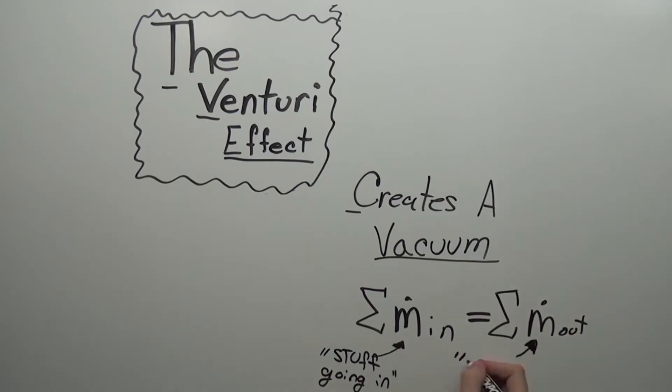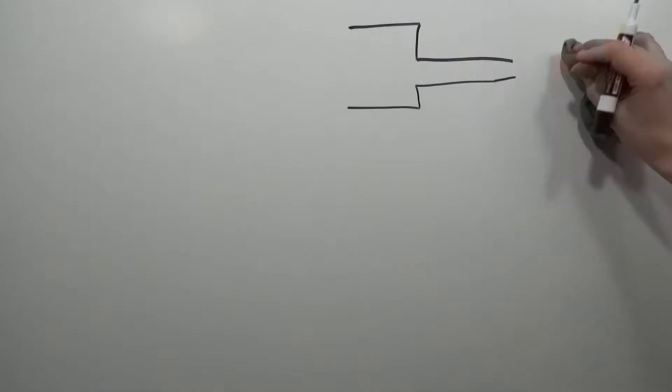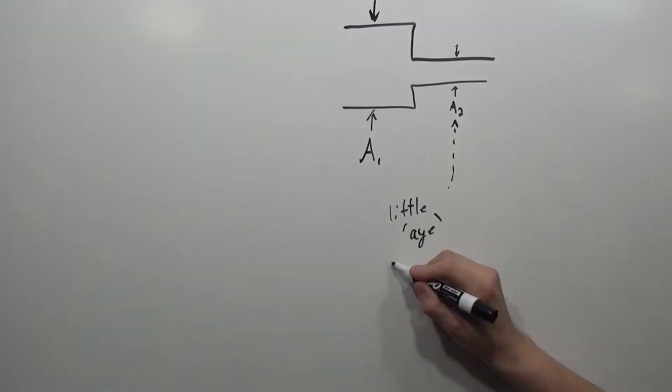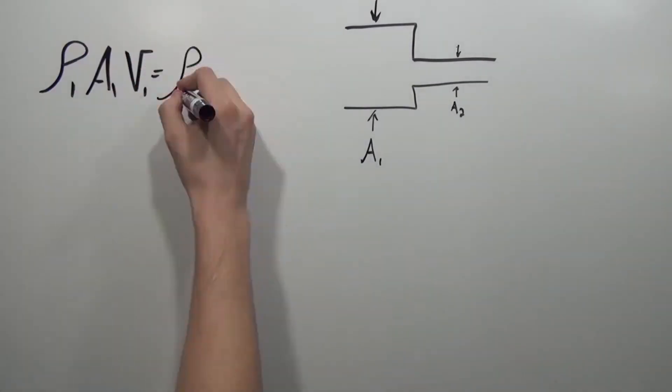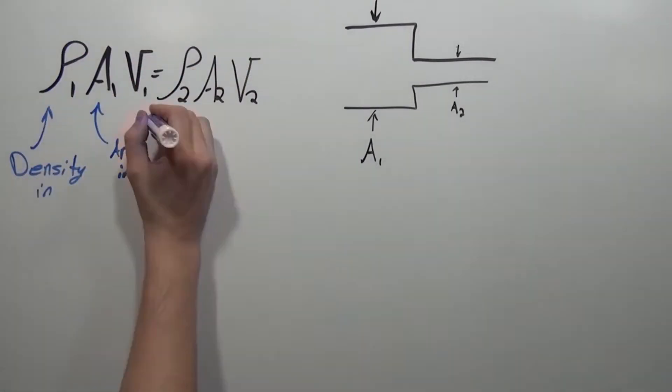This may seem counterintuitive, but if you think about mass conservation, this makes sense. The same amount of mass that goes into the pipe must come out. For this to happen, because we reduced the diameter, the water is forced to come out ever more quickly.